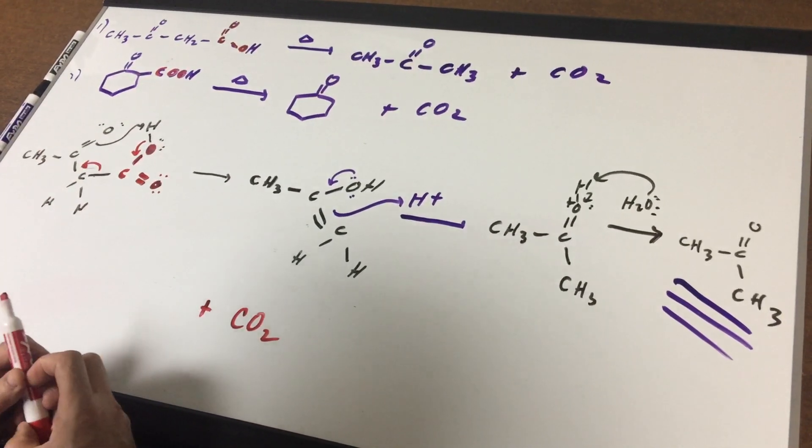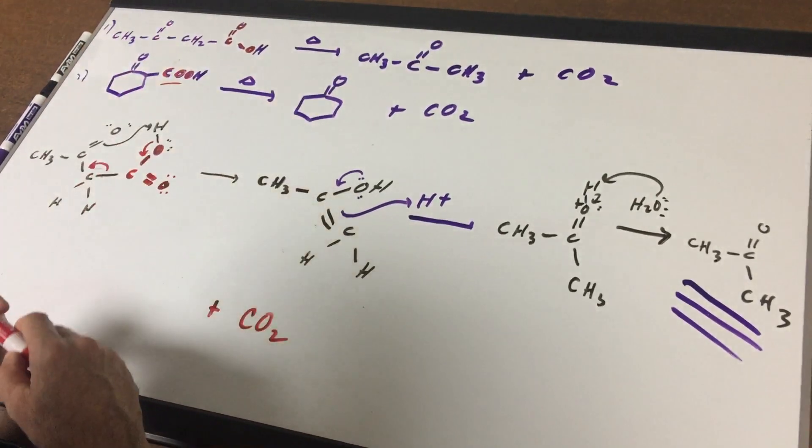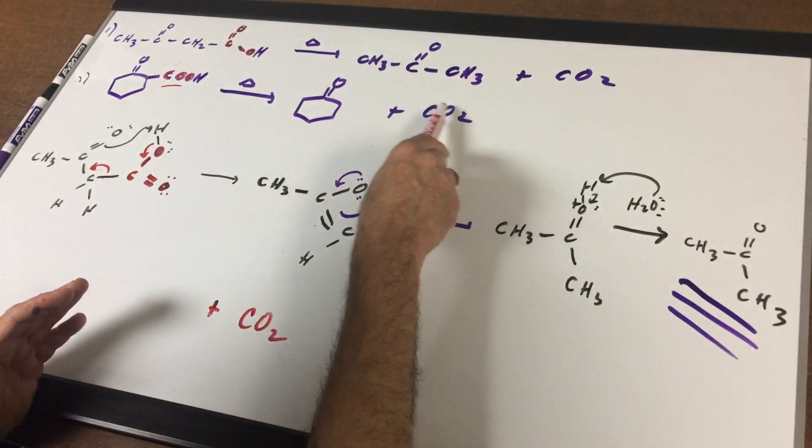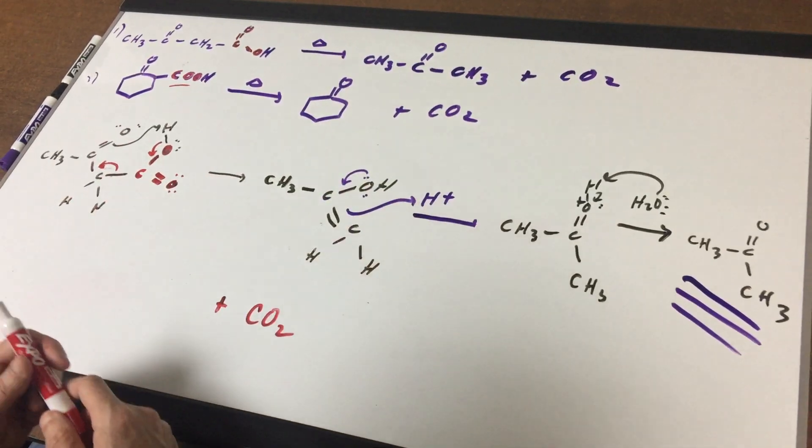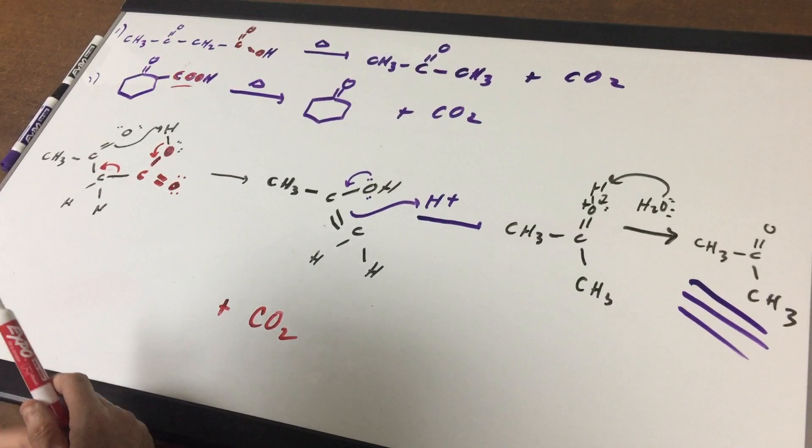Let's try another one. On example number two, again you can see the CO2, you heat it up, you lose the CO2, and then you're left with the cyclo ketone. How did this reaction happen? Let's have a quick look.